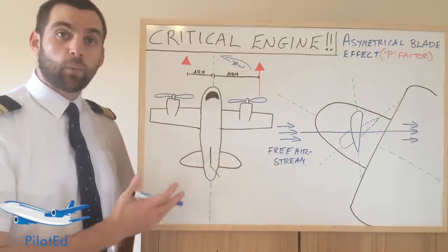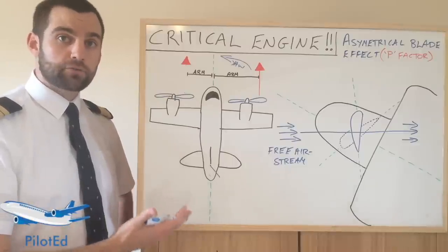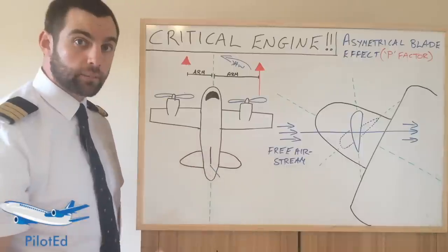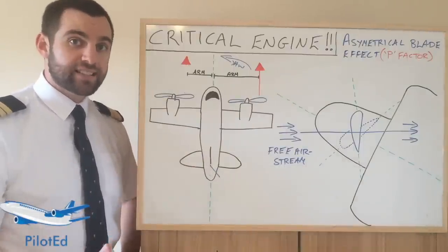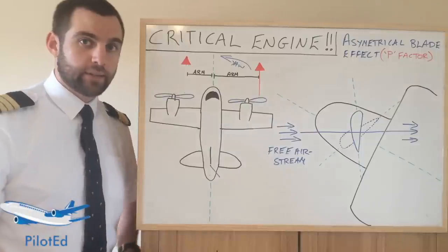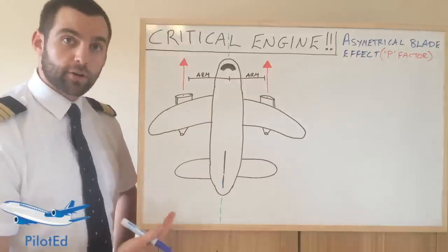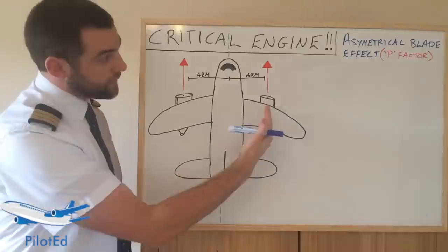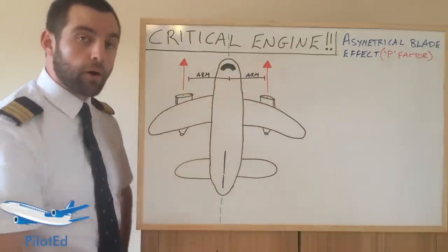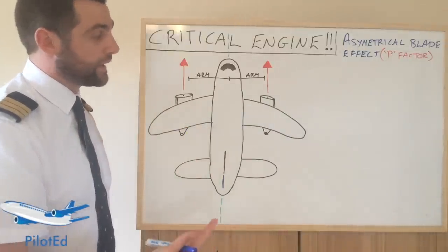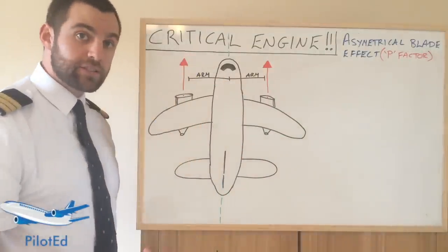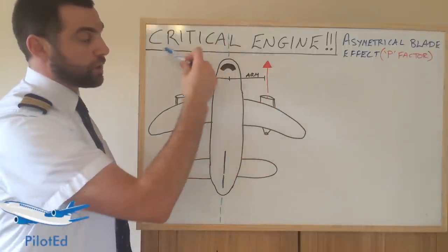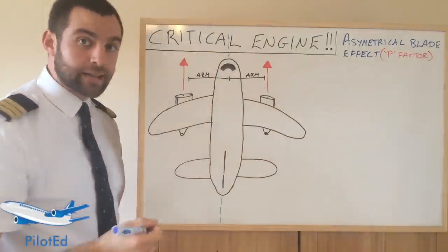I hope that's cleared up any doubts you may have had about why we have critical engines on propeller-driven aircraft. This is the drawing you really need to get your head round — why the down-going propeller has more lift than the up-going propeller. Now the big question that arises a lot: does a jet aircraft have a critical engine? Well, yes and no. Here we have a drawing of a jet. The thrust vectors for both engines have exactly the same arm. They don't have the P-factor or asymmetric blade effect — they generate thrust at the same arm. So technically, there's no critical engine. If one fails, it would yaw over to the left or right at the same rate.